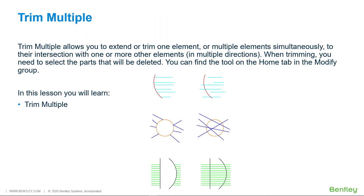Trim Multiple allows you to extend or trim one element or multiple elements simultaneously to their intersection with one or more elements in multiple directions. When trimming, you need to select the parts that will be deleted. You can find the tool on the Home tab in the Modify group. In this lesson you will learn Trim Multiple.